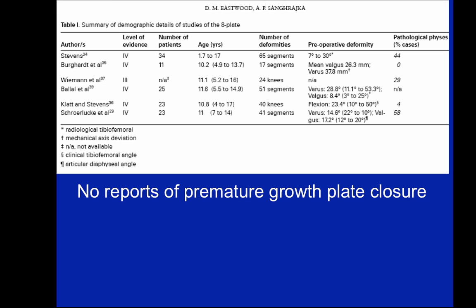As you can see from this review by Dr. Eastwood covering six recent studies on the eight plate, the range in age is quite low. Dr. Stevens had 34 patients with the lowest reported age of 1.7 years. Other papers report ages of 4.9, 5.2, 4, and 7 years. As the literature has developed, the lowest age to place these implants has trended lower and lower. In the breakout session yesterday, Dr. Sepulveda had a case of a one-year-old she successfully treated with implant-mediated guided growth.